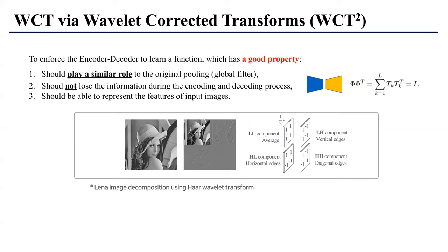Instead of using pooling and unpooling operations in the encoder-decoder structure, we substituted every max pooling and unpooling or nearest-neighbor upsampling with a wavelet decomposition and reconstruction module. This is comprised of four channels — each being a component of the Haar wavelet. The first component looks like an average filter and the others like vertical, horizontal, or diagonal edges. This is a fixed filter, like the max pooling module, so we do not learn it — we just substitute max pooling with this slightly wider four-channel representation.